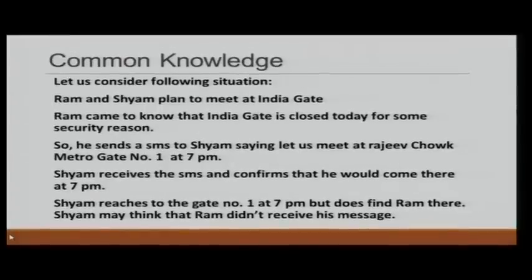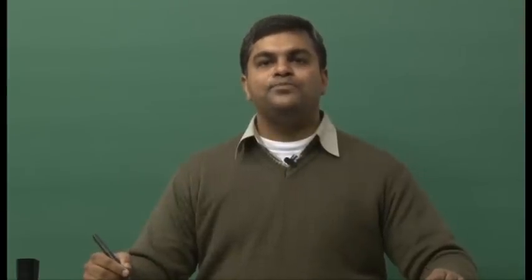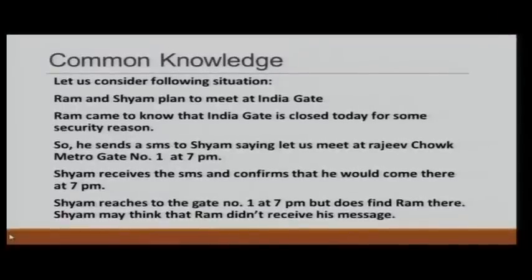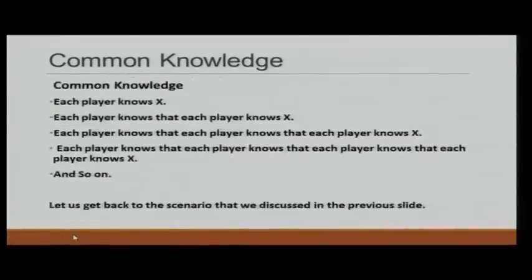How about the third step — does Ram know that Sam knows that Ram knows they are supposed to meet at the metro station at 7 p.m.? Yes, because Ram received Sam's confirmation. But from Sam's point of view, does Sam know that Ram knows that Sam knows they are supposed to meet? No — that is where it breaks down. So this scenario does not fulfill the requirement for common knowledge. In game theory, we assume that players have common knowledge — they all know the rules of the game, they all know the payoffs, they know that other players also know, and they know that all other players know that all players know the payoffs and rules, and so on.